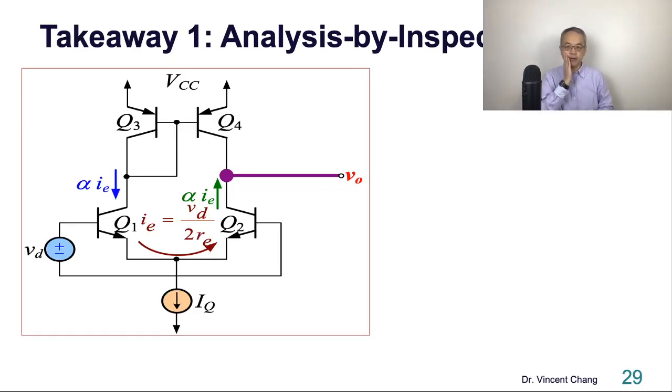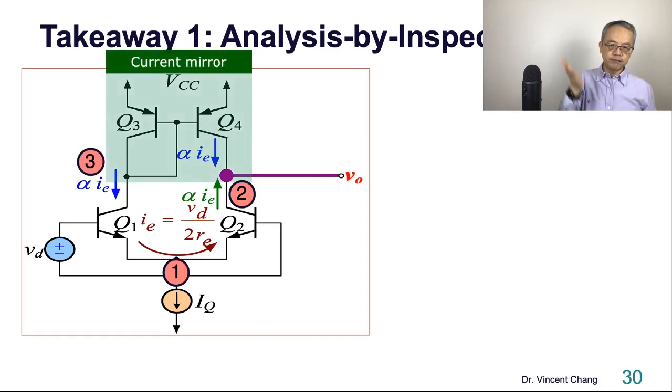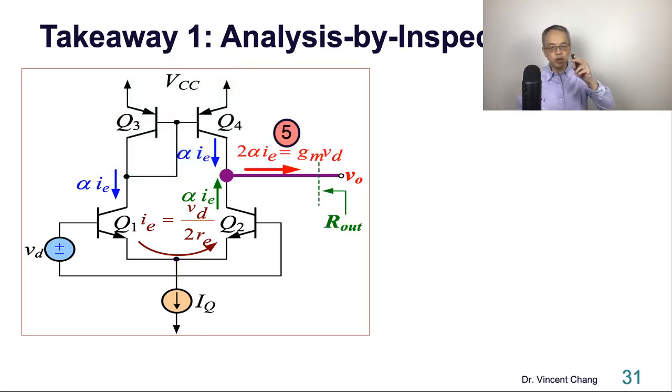So here's the takeaway. Analysis by inspection, five steps. One, two, three. Brown, green, blue. Here's number one, number two, three. Touch the mirror. Three to four is current mirror, alpha IE. And then two plus four equals five. Two alpha IE equals gm times VD. Five current: one, two, three, four, five.